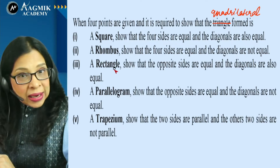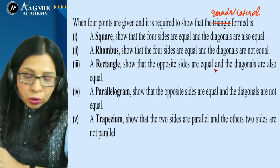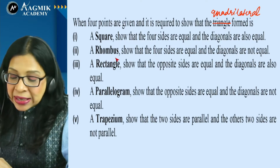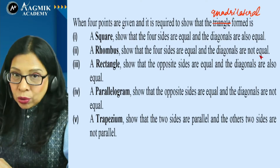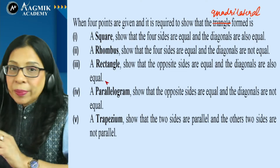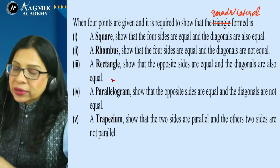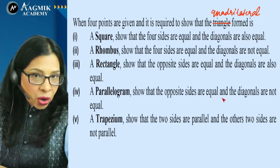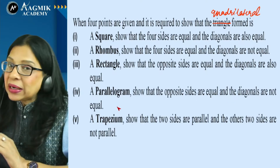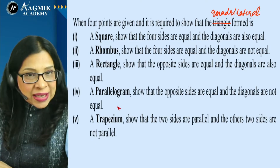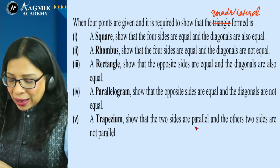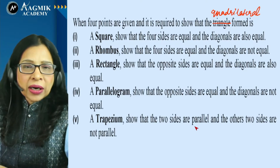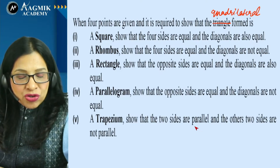Show whichever property applies to the quadrilateral in question. Moving on — the circumcenter is equidistant from all three vertices of a triangle. To find its coordinates, assume them as (x, y), and if triangle vertices are A, B, C, then distances PA, PB, and PC are all equal.